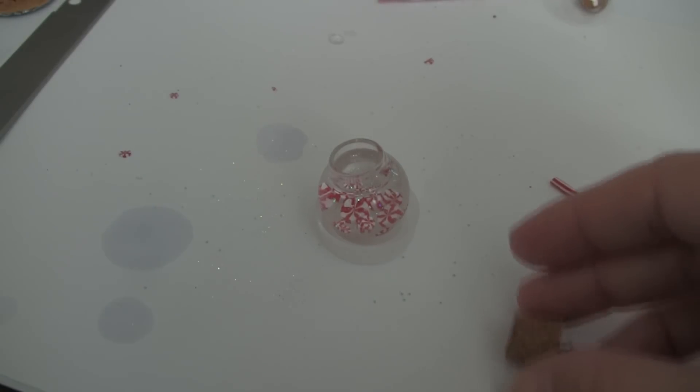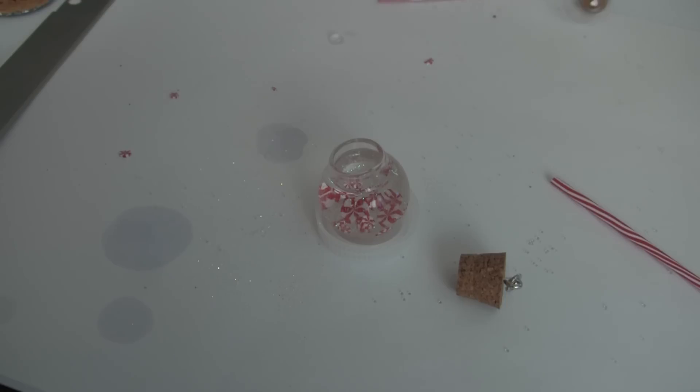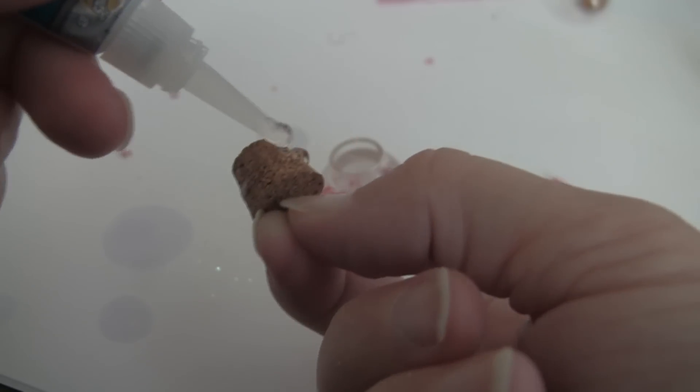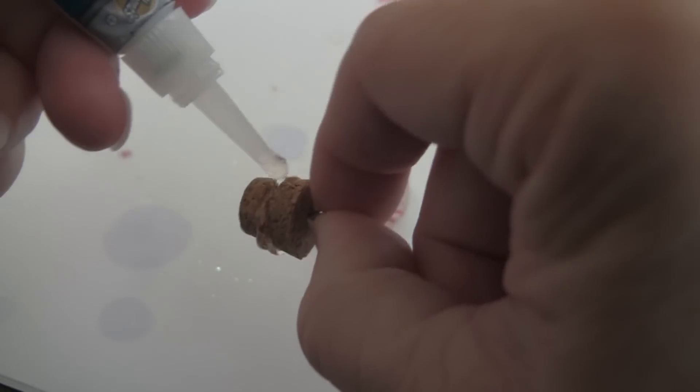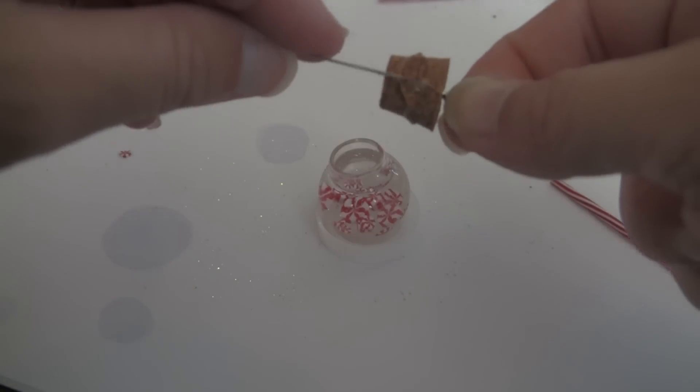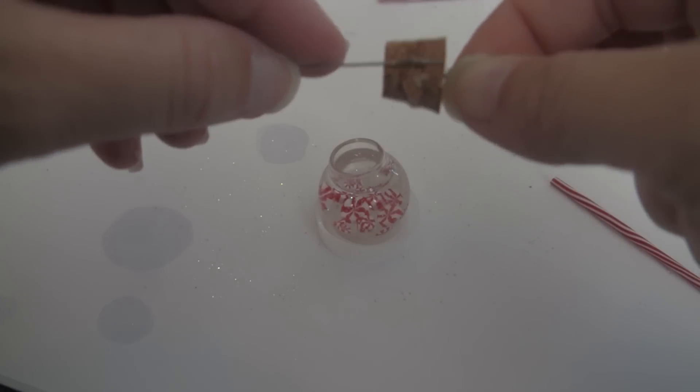There I'm going to take some jewelry glue. You can use super glue too. I'm running it along the side of the cork.